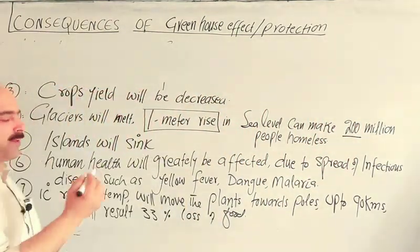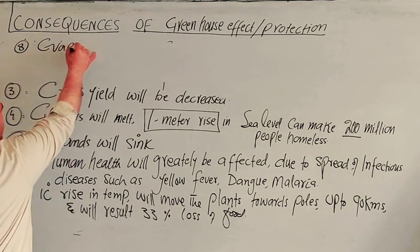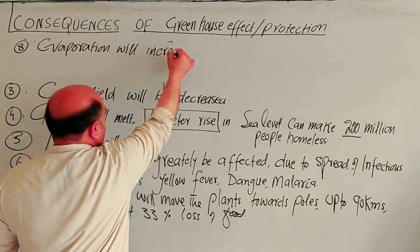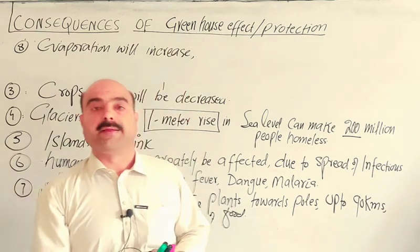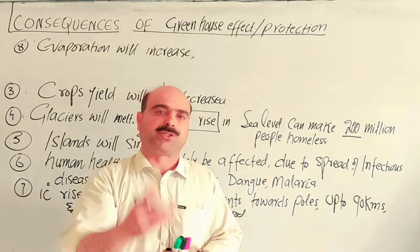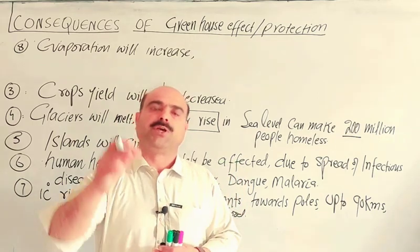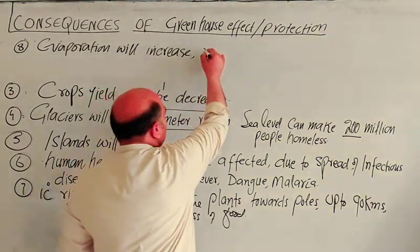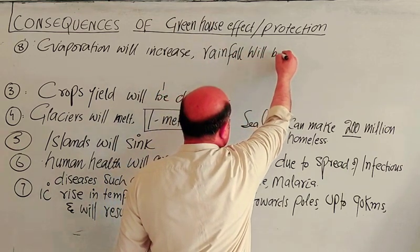Another consequence: evaporation will increase and rainfall patterns will be disrupted. The high temperature caused by global warming and the greenhouse effect leads to greater evaporation and transpiration. This irregular rainfall can then lead to flooding in some regions.